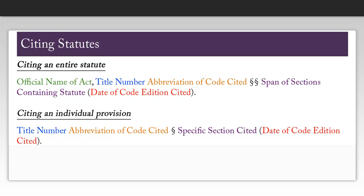You can also cite an individual provision within a statute. For this, you just need the title number, the abbreviation of the code cited, the section symbol, the specific section cited, and the date of the code edition cited.